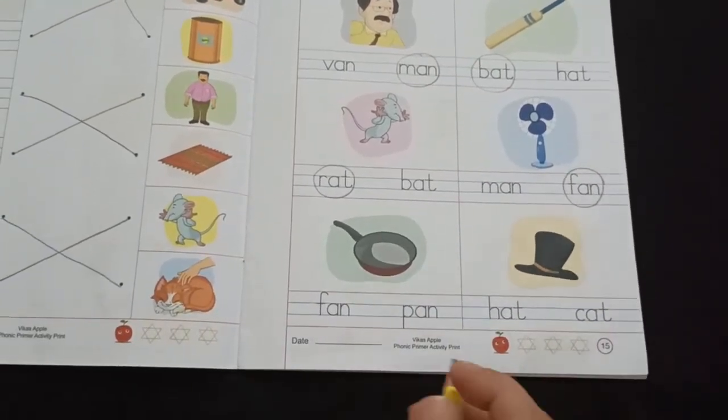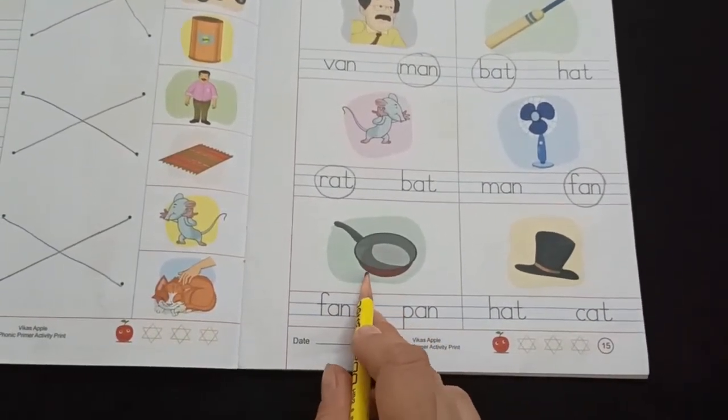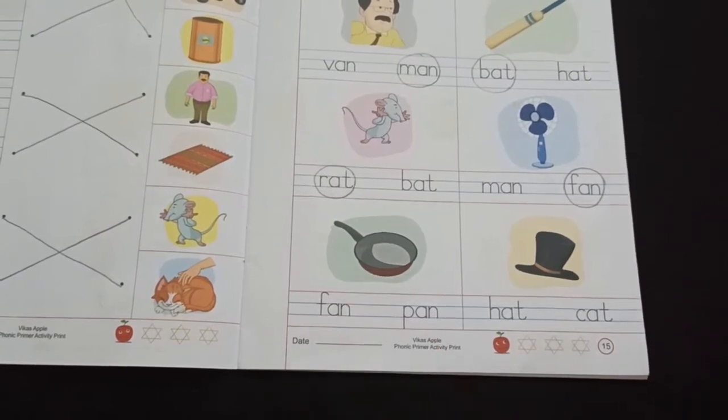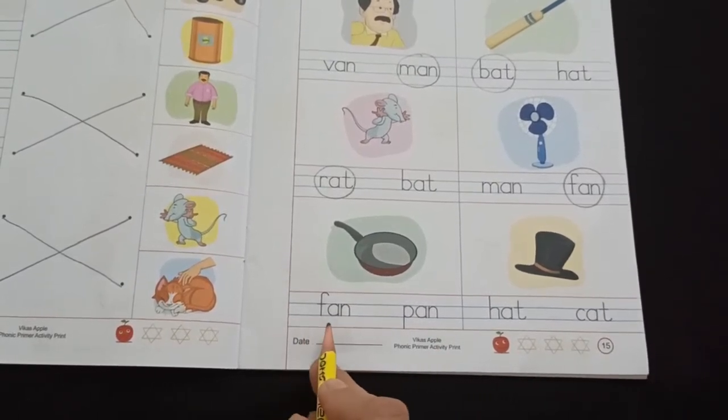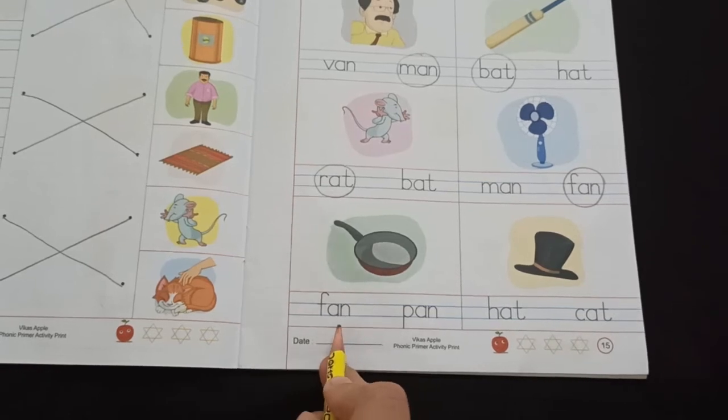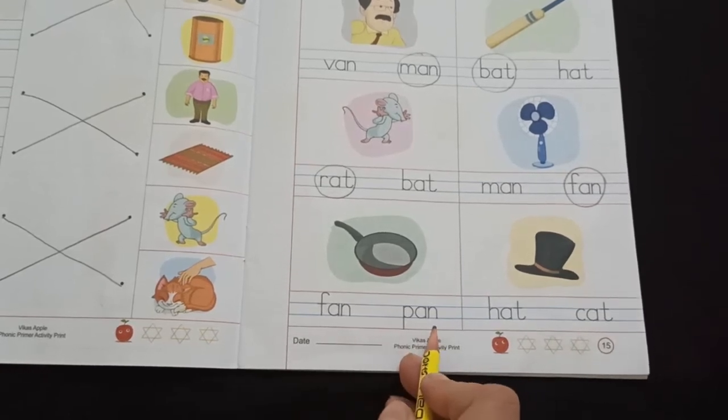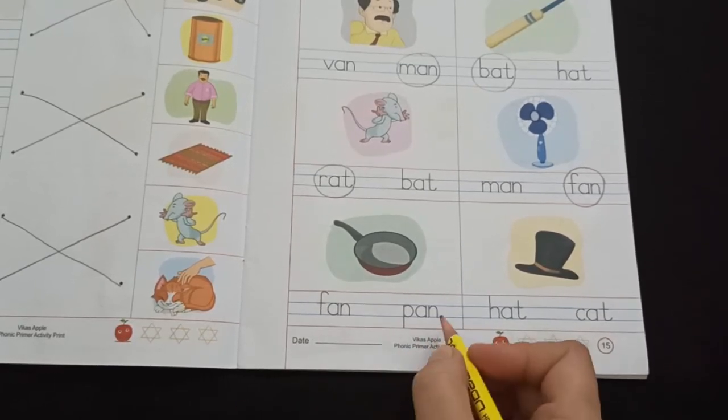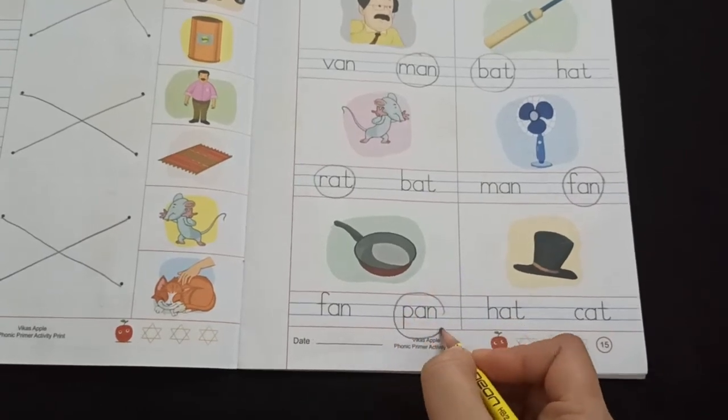Now, next picture. What is this? Yes. Pan. F-A-N, fan. P-A-N, pan. So, the correct word is P-A-N, pan.